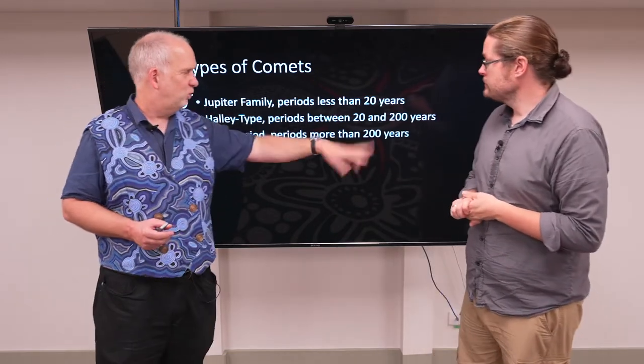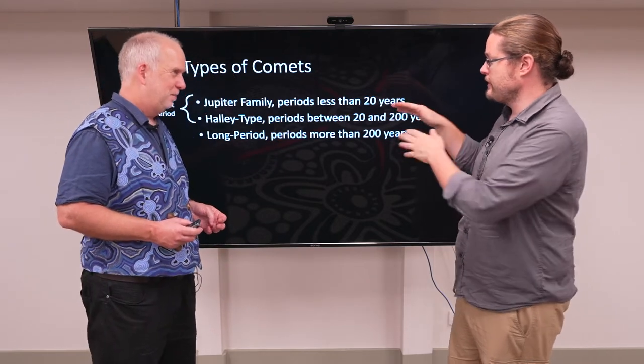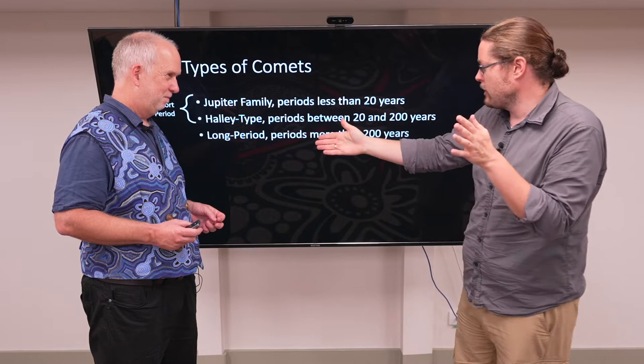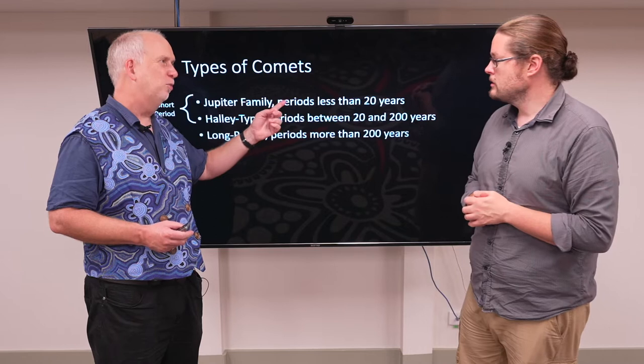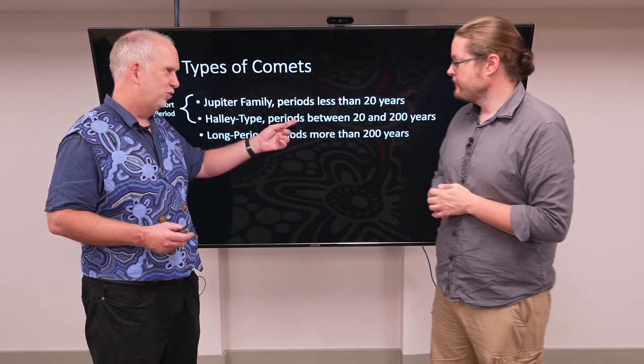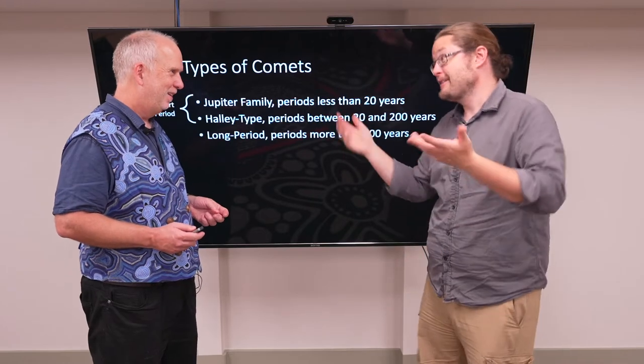The Halley type comets have periods between 20 and 200 years. It's about 75 years for Halley's Comet. So essentially they're similar, they just go a little bit further out? Yeah, so these are things you can see repeatedly. These tend to be the ones that spacecraft go to. These are often once in a lifetime that people wait every 75 years to see.